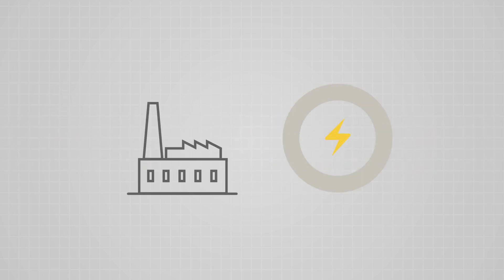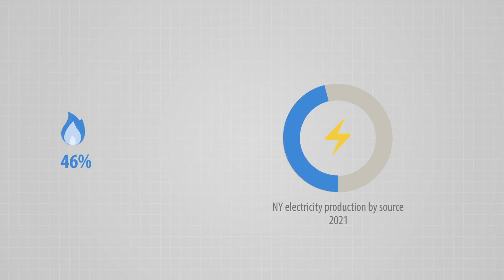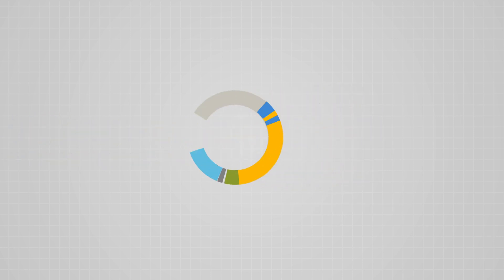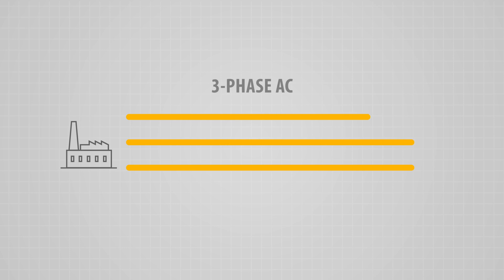Power plants convert different forms of energy into electricity. In New York, that energy can come from the combustion of natural gas, the splitting of uranium atoms in a nuclear reactor, the movement of wind or water, or it can be radiated by the sun. The electricity produced by utility-scale generation is three-phase AC power.